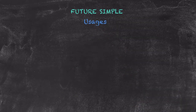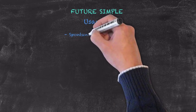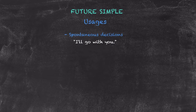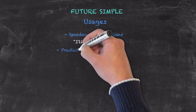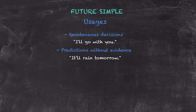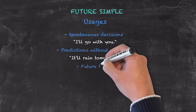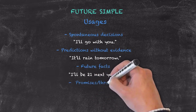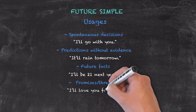The usages for the future simple are as follows. First, spontaneous decisions: 'I'll go with you' — someone has just told you they're going to the store, you need things too, and you immediately decide. Second, predictions without evidence: 'It'll rain tomorrow' — there might not be a cloud in the sky but you still make a prediction. Third, future facts: 'I'll be 21 next year.' Finally, promises and threats, often heard at weddings: 'I'll love you forever.'